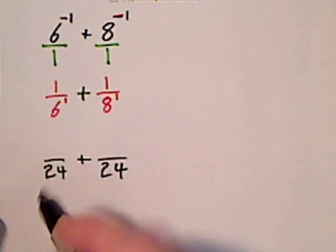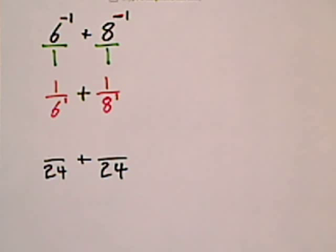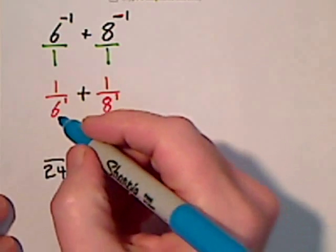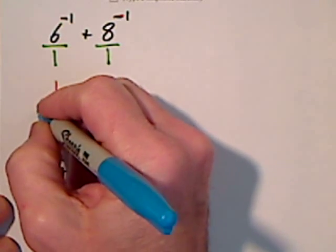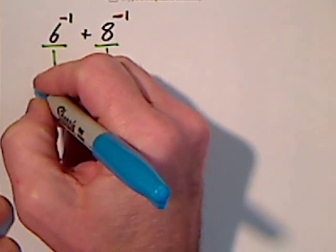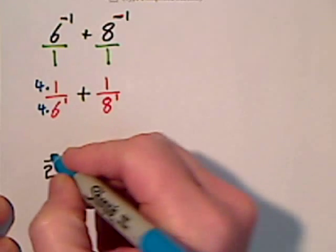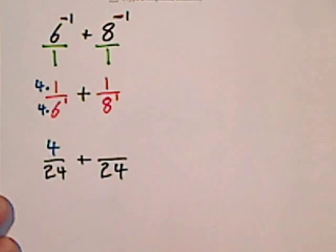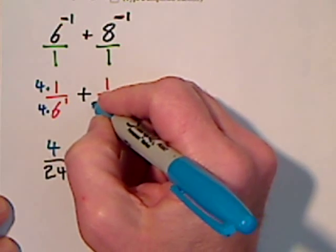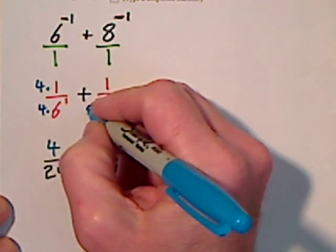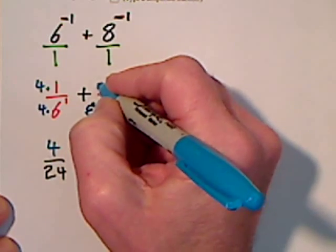Of course I can't just change it from 6 to 24 — I have to get there systematically. To get from 6 to 24 I multiplied by 4, and I always have to do the same thing to the numerator. Then to get from 8 to 24 I multiplied by 3, so I have to do the same to the numerator.